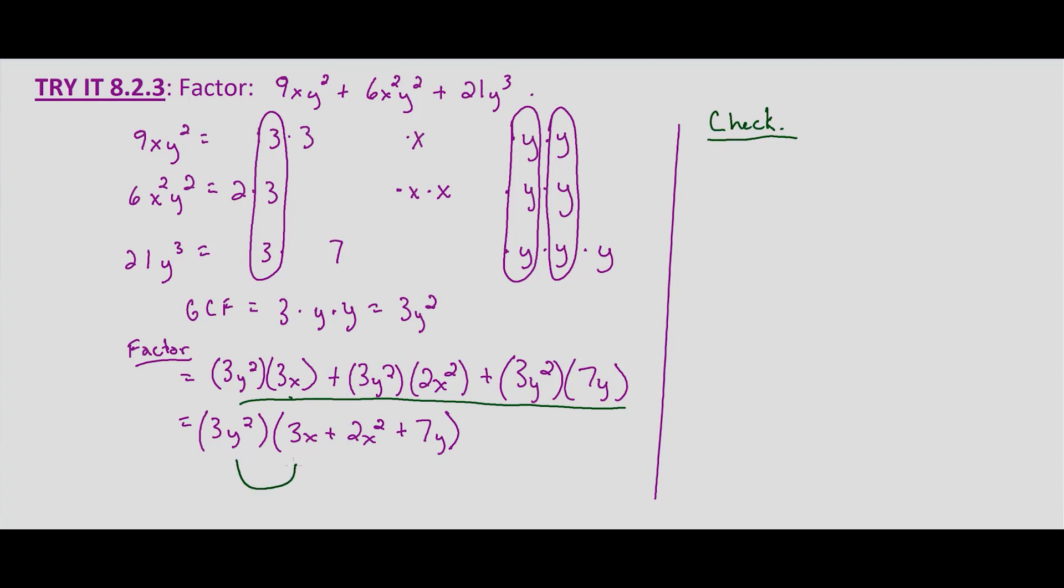So we end up with 3y² times 3x, plus 3y² times 2x², plus 3y² times 7y.